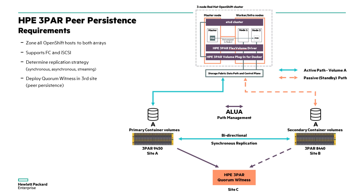Before we get started with the demo, let's cover some of the prerequisites or assumptions in case you want to recreate this demo within your environment. The first and most important requirement is that you need to ensure proper connectivity and zoning has been configured between your sites and 3PAR arrays. Also, if you are using Pure Persistence, a quorum witness will need to be deployed in a third site.